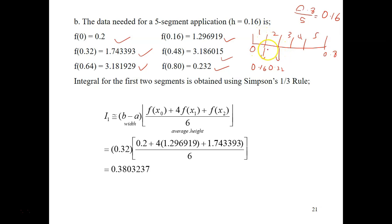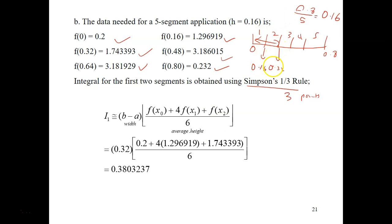You need to think about which segments are suitable for which method. In this example, the first two segments will be solved using Simpson's one-third rule, because it only needs three points. You could use Simpson's one-third at the end and use the rest for 3/8, but in this example, the first three data points are used for Simpson's one-third rule. This is the formula to substitute: 0.2 for f(x₀), plus 4 times f(0.16) which is f(x₁), plus f(x₂) which is 1.743393.